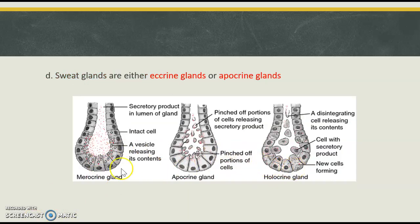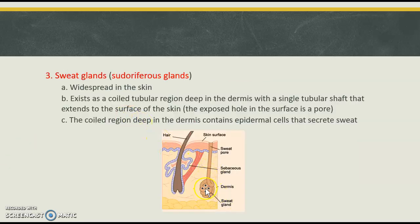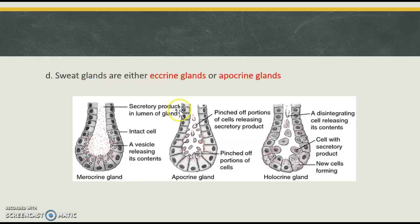Looking back at our three classifications of glands — merocrine, apocrine, and holocrine — sweat glands tend to be either eccrine or apocrine in nature. Eccrine sweat glands go directly to the surface of the skin, just like we saw in the picture, whereas apocrine sweat glands actually attach to a hair, similar to sebaceous glands. Both eccrine and apocrine secrete substances with bits of the cell being pinched off, releasing the sweat as the pinched-off vesicle travels upward through the tube.